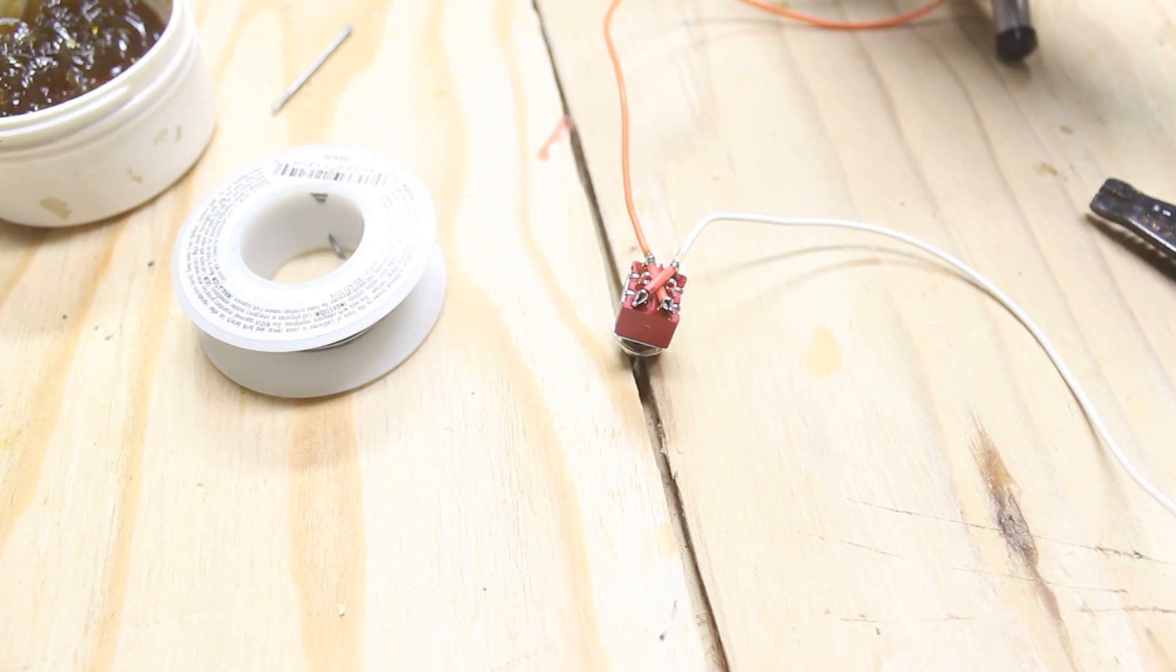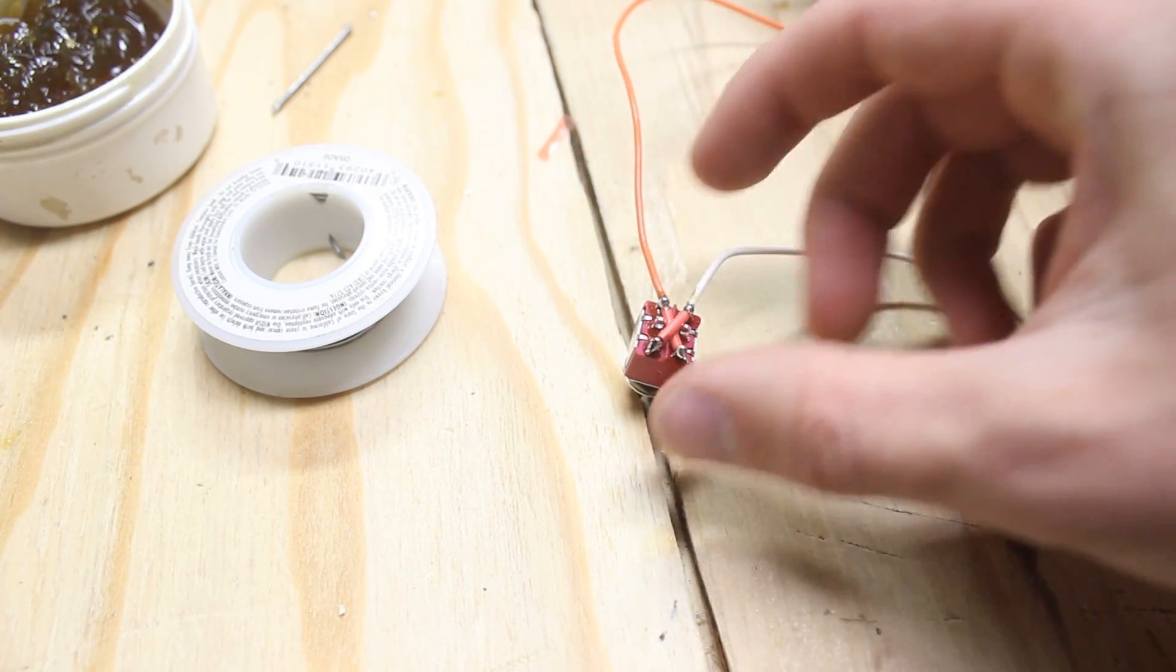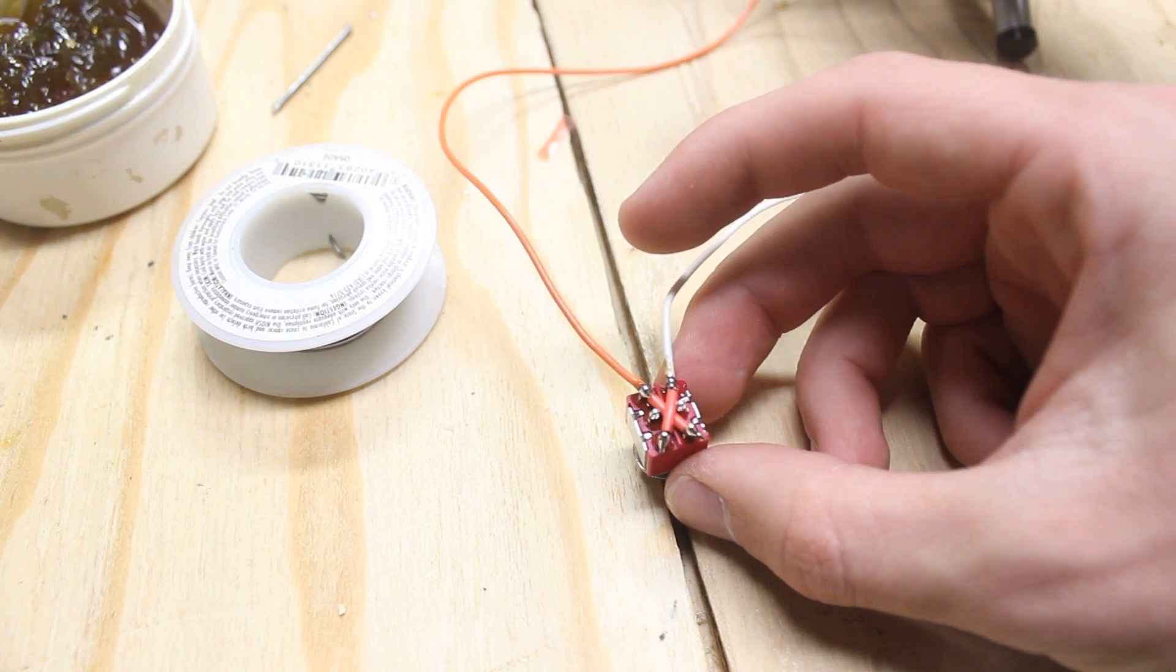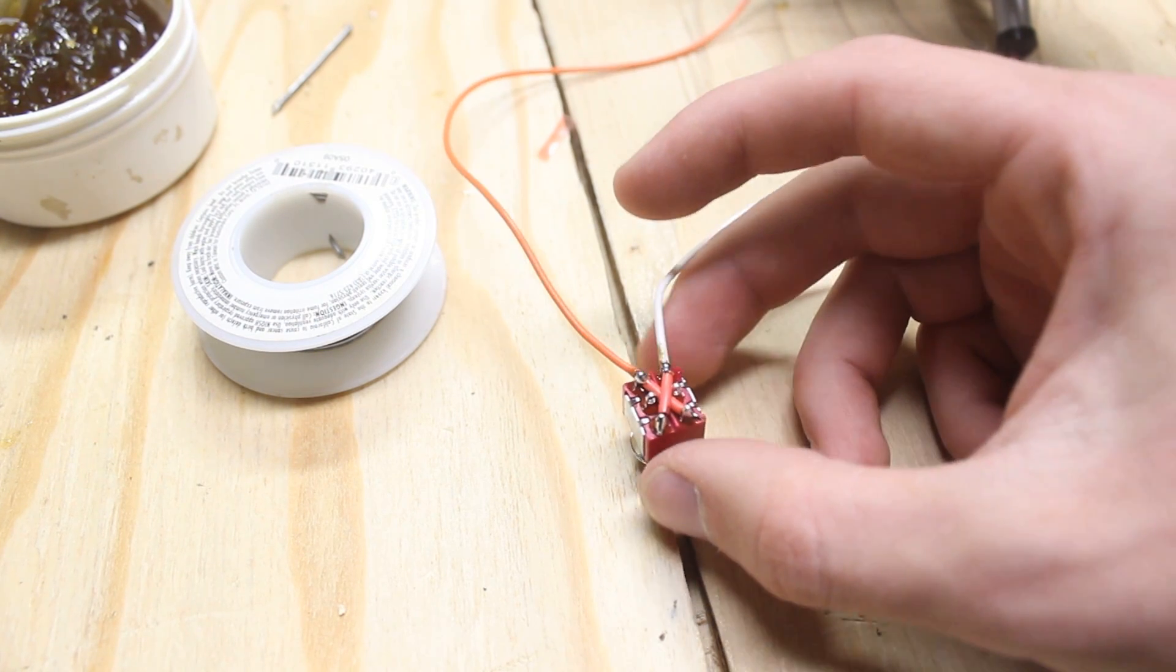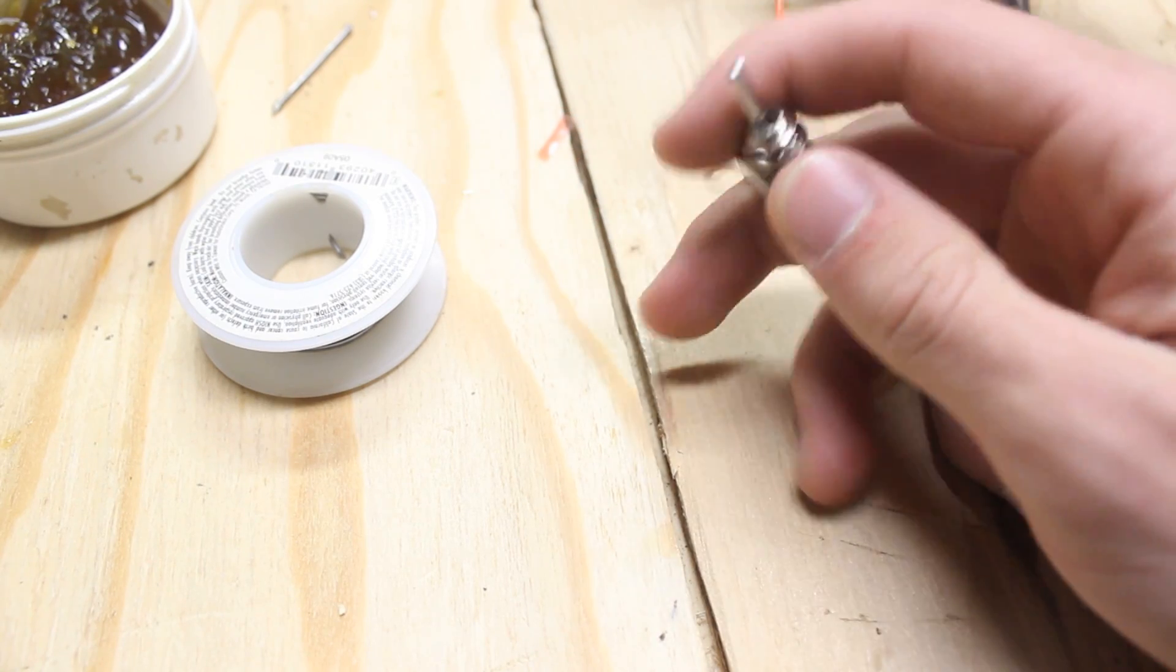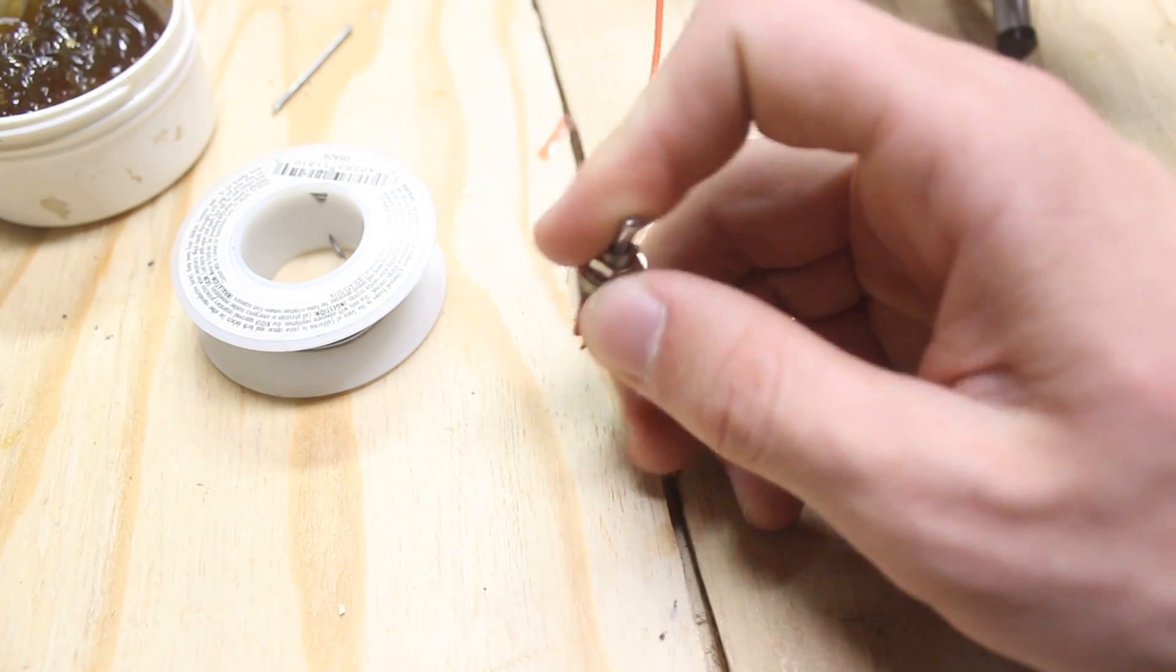All right. So we got this all wired up. And then the two remaining poles there, those two will go to the track or to the switch machine. And that is what will power that and change the direction of your switch when you flip the lever.